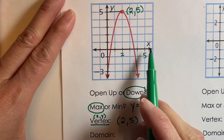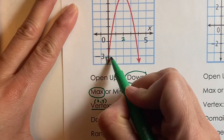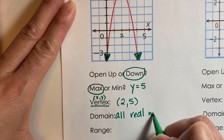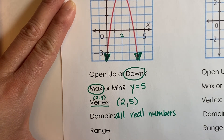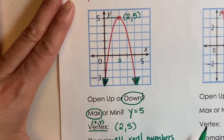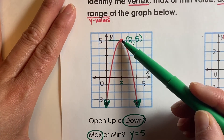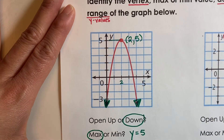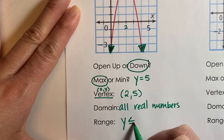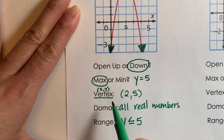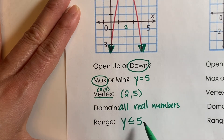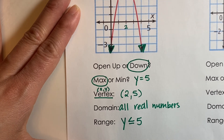The range depends on the vertex's y value. Since the graph is facing down, we're including all values below positive 5. So the range is y is less than or equal to 5. The vertex sets up your max or min value and also establishes the starting or ending point of your range.